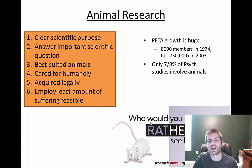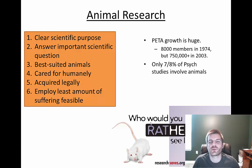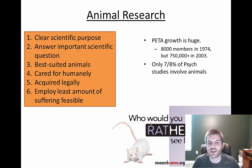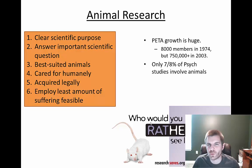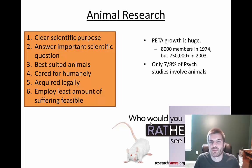Looking at the opposition, the group PETA — which works to protect animals and wildlife — was started in 1974 with about 8,000 members, but as recently as 2003 it had grown massively to over 750,000 members. These are many people giving voice to the argument against animal testing. However, only about 7 to 8% of psychological studies actually involve animals, and out of all animals worldwide, probably less than 1% are actually used for psychological testing.